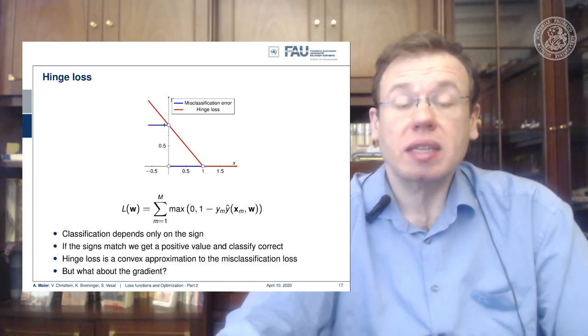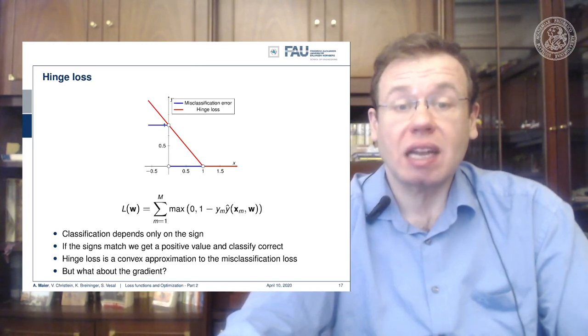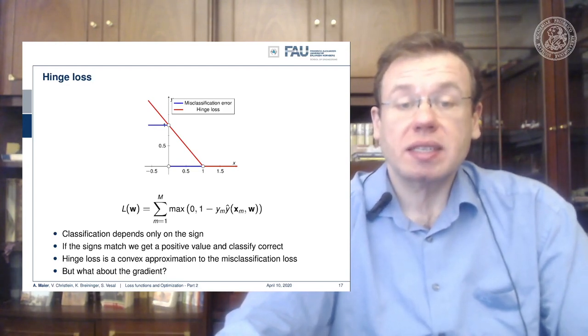So the hinge loss is then a sum over all the samples that essentially receive 0 if our value is larger than 1. So we have to rewrite the right-hand part. We reformulate this a little and we take 1 minus ym times y hat.